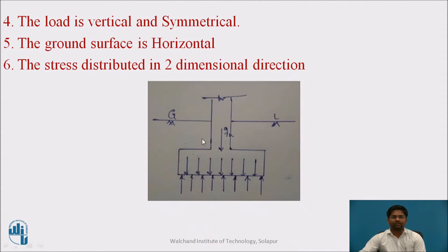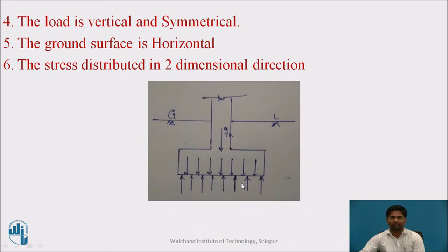The fifth assumption is that the ground surface is horizontal. The sixth assumption is that stress distribution is two-dimensional — the stress distributed inside the soil sample is two-dimensional, meaning that due to vertical pressure, horizontal (lateral) pressure also acts inside the soil along both the X-axis and Y-axis.